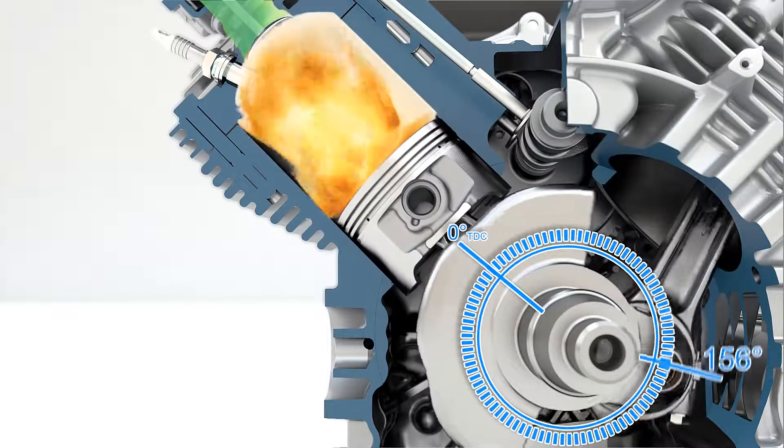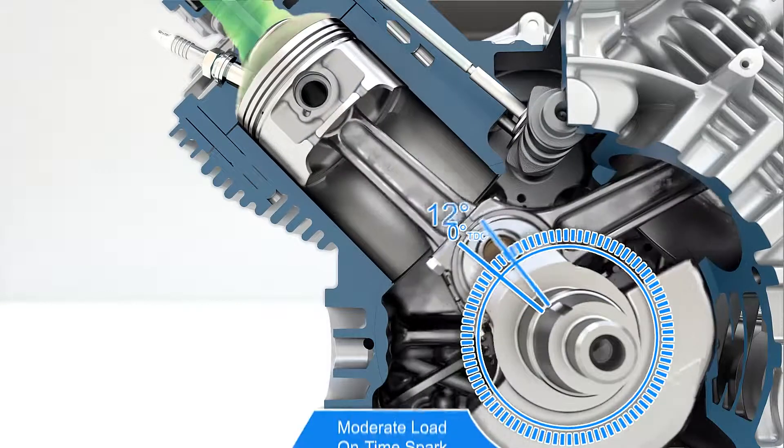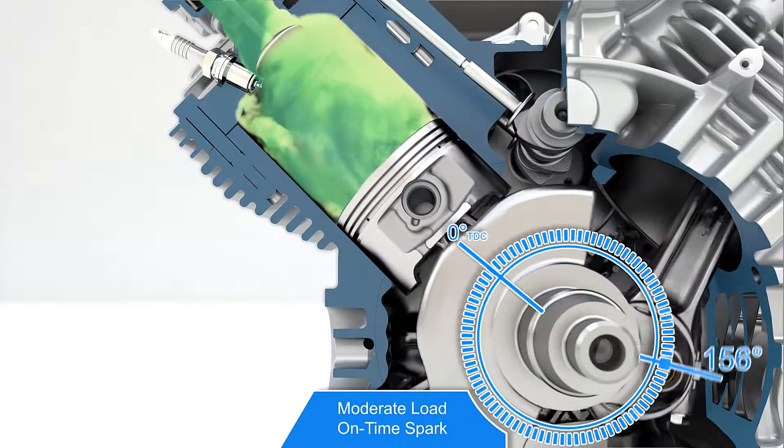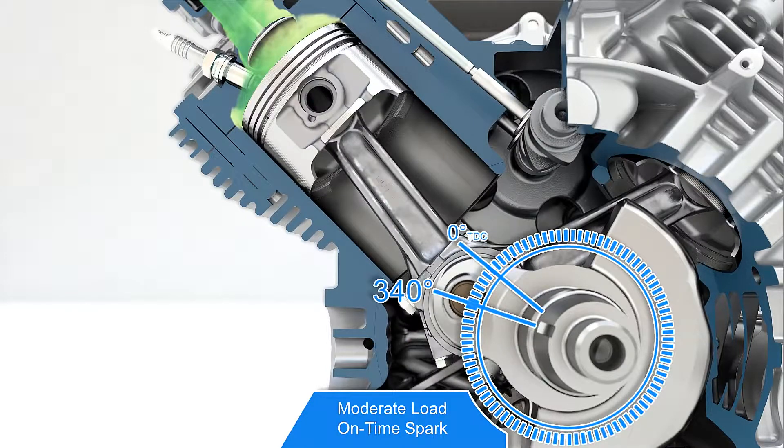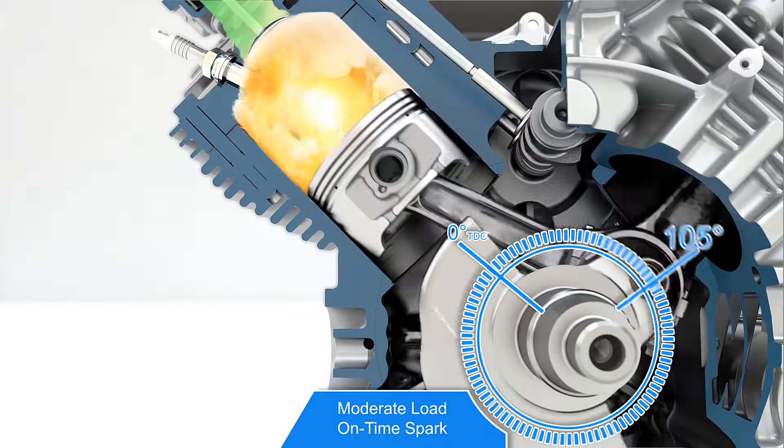Let's look at some varying operating condition examples. When the engine is operating under moderate load and high-speed conditions, the proper spark advance will be delivered at 340 degrees, or 20 degrees before top dead center.